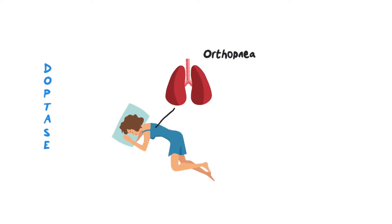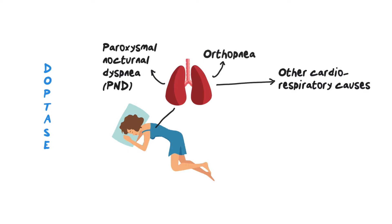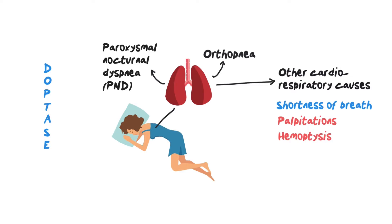For associated symptoms, I tend to start by asking about any shortness of breath when laying down flat — essentially asking about orthopnea. My follow-up question would be: do you have any sensation of shortness of breath that wakes you up at night? This covers paroxysmal nocturnal dyspnea. You also want to rule out cardiorespiratory causes of swollen legs, asking about shortness of breath, palpitations, hemoptysis (coughing up blood), and sputum production.